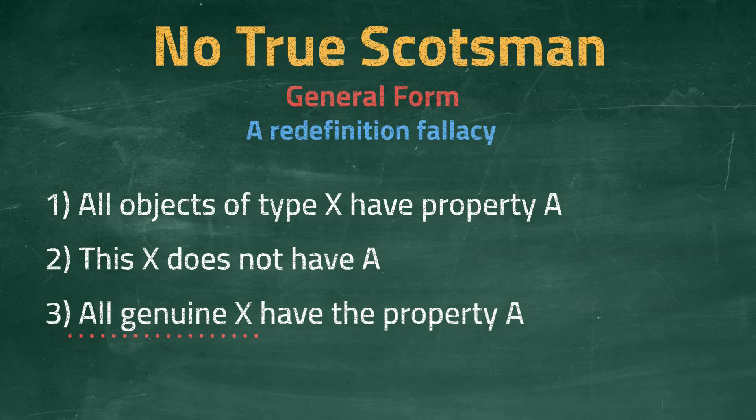The problem with using this fallacy is that it makes the argument less useful. In the end, it only tells us about this one person's subjective view on what they think makes X genuine. It tells us nothing about X in general.